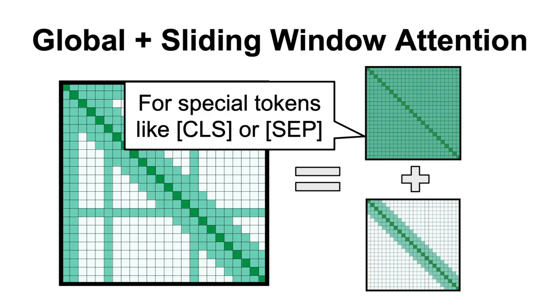It uses a sliding window for most tokens, but allows a few tokens, typically the special tokens like the CLS or SEP, to attend to all tokens in the sequence. This allows for long-range dependencies to be captured by those special tokens.